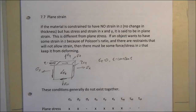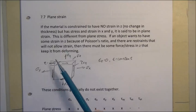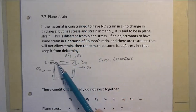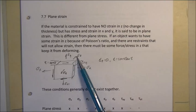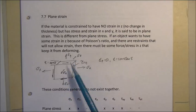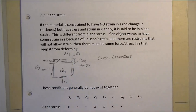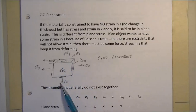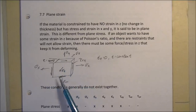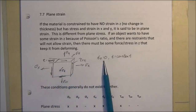Looking at the stress element, in plane strain the thickness is going to remain constant and we restrict it from moving by having some stress on the z axis. So sigma z is going to occur, but the thickness stays the same. Just like before, we may have some sigma in x and y and some shear tau in x and y, but the thickness remains constant, therefore the strain in z is zero.